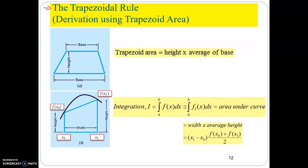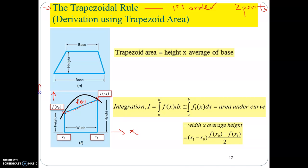Let's continue with the trapezoidal rule. This is a first order method requiring two points to form a linear line. By linking the line between these two points, you obtain a linear line which is the height function f1(x). This is your x-axis and this is your f(x)-axis. We want to find the integration for the f(x) function — the black line — from a to b. Using the trapezoidal rule, we approximate the integration, which is the area under the curve, by using the trapezoidal shape.